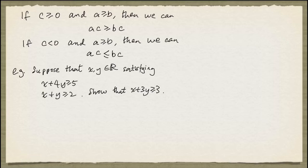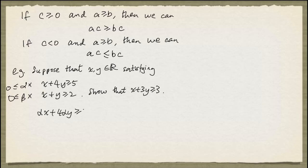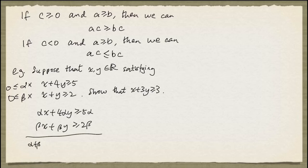Well, let's multiply the first inequality by alpha, and we require alpha to be non-negative, and beta to the second one, so these are non-negative. And if we do that, we have alpha x plus 4 alpha y greater than or equal to 5 alpha. And the second one will give us beta x plus beta y greater than or equal to 2 beta. And now if we add these two inequalities, we'll get alpha plus beta times x plus 4 alpha plus beta times y greater than or equal to 5 alpha plus 2 beta.